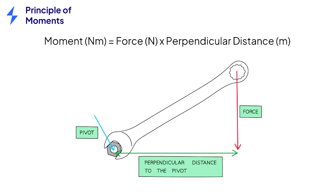A moment is calculated using the equation moment equals force times perpendicular distance from the pivot. The perpendicular distance is the distance at right angles to the direction of the force applied.